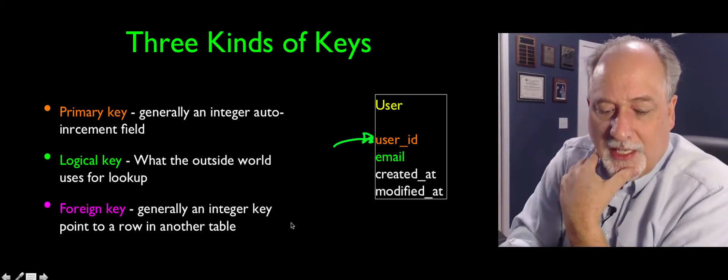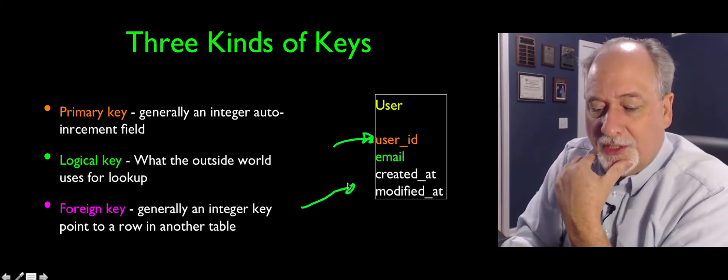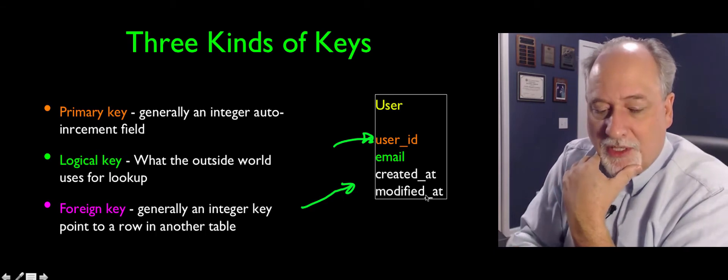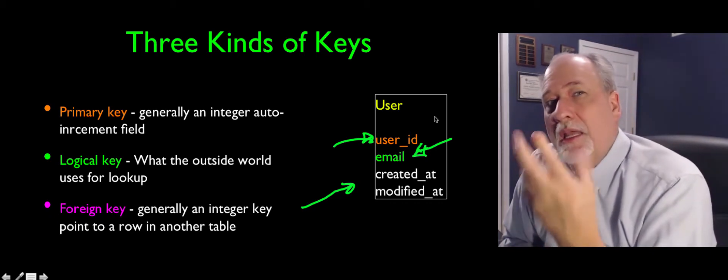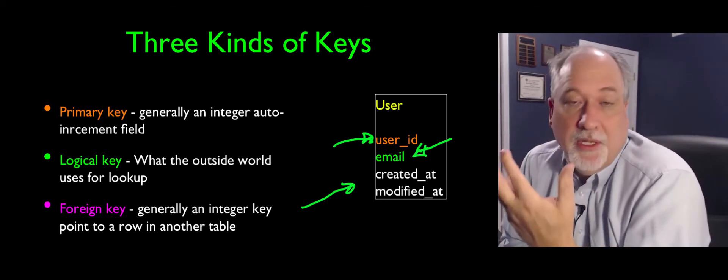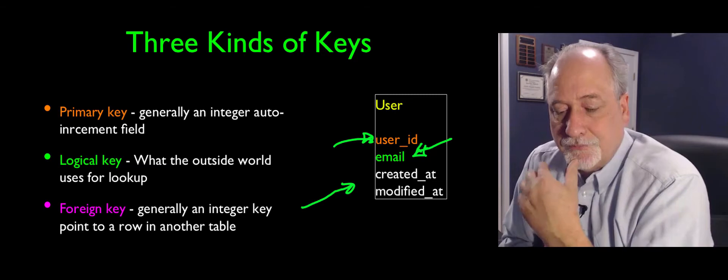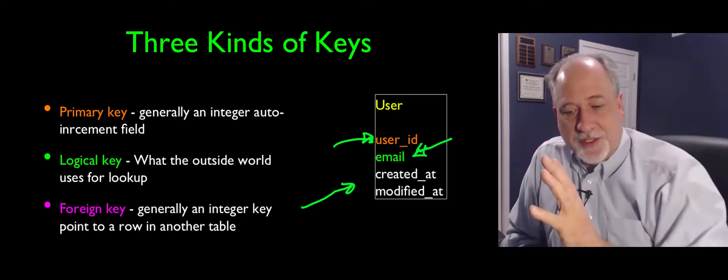The foreign key is the key that points to something. It's one of these pointer keys. The logical key is the key that the world would look this up. Maybe the person's email, for example. So the outside world and the inside world.